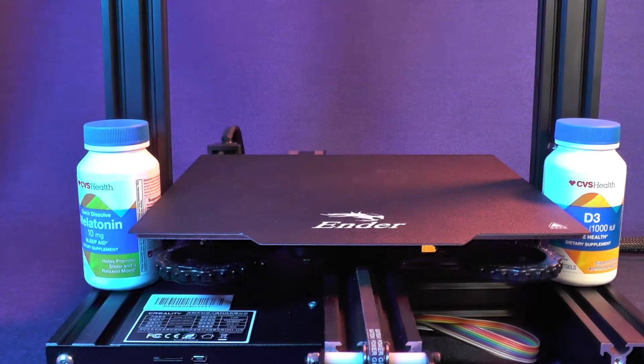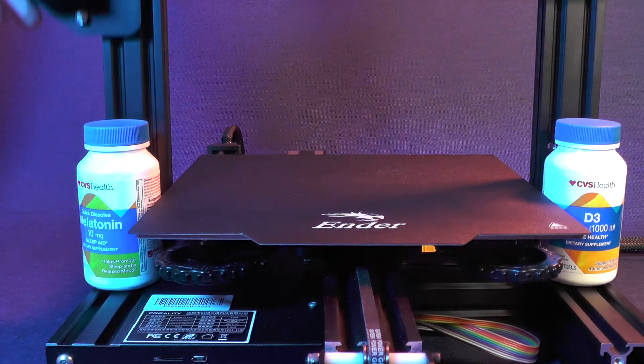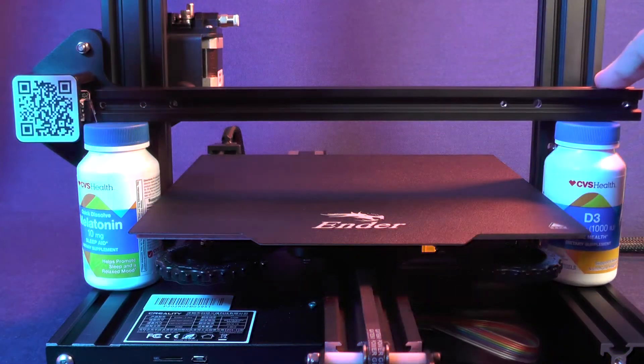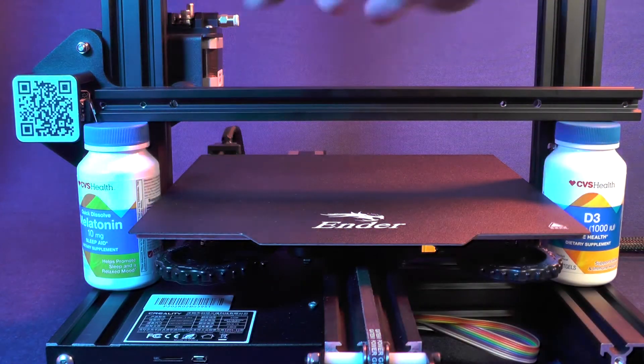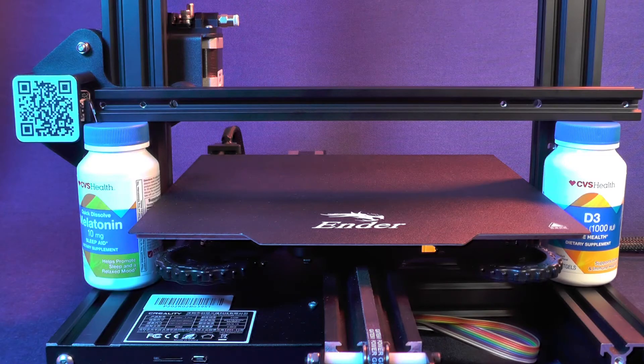Finally, slide in the extruder assembly again, and make sure that the aluminum extrusion is still aligned. Otherwise, repeat the process.